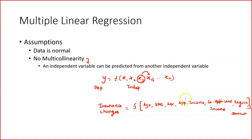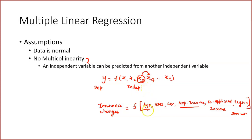Suppose, for example, if the co-applicant's income can be predicted from the applicant's income, or if applicant income can be predicted from age — if age and applicant income are correlated, that means I can predict applicant income based on age. It means there is multicollinearity in the data set, and the multicollinearity is caused due to the relationship between age and applicant income. Applicant income increases with age, so just with age I can predict the applicant income.